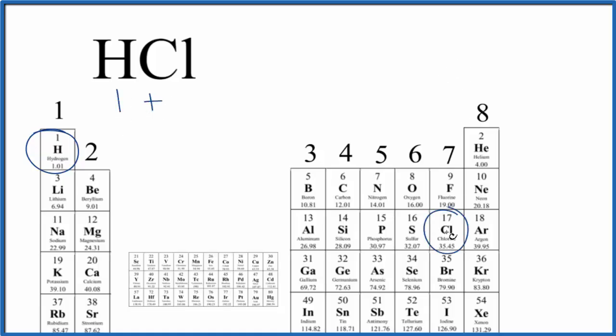Chlorine is in group 17, sometimes called 7A. These have seven. Seven plus one, that equals eight total valence electrons for the HCl Lewis structure.